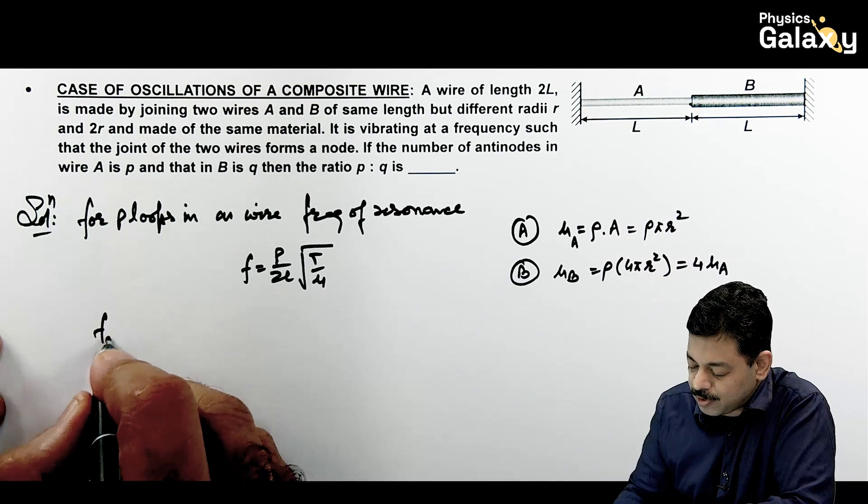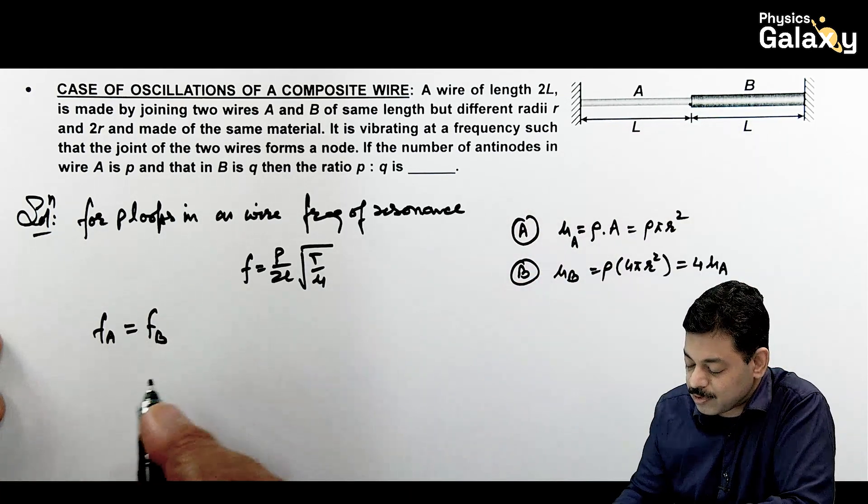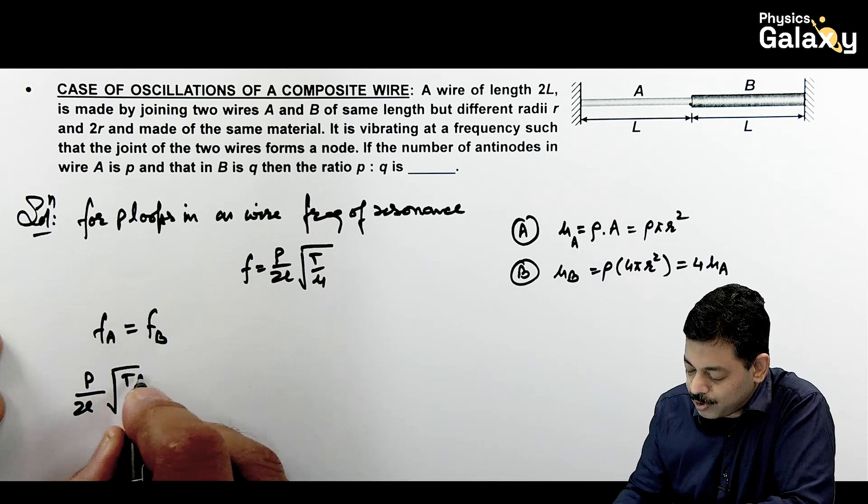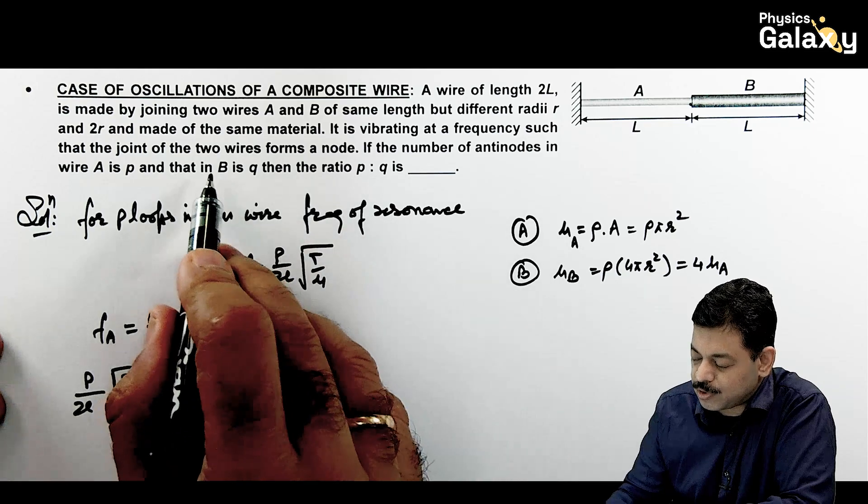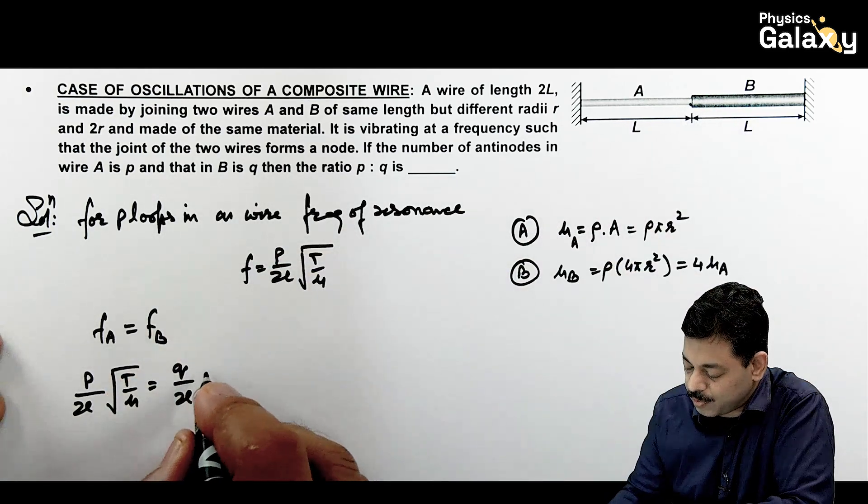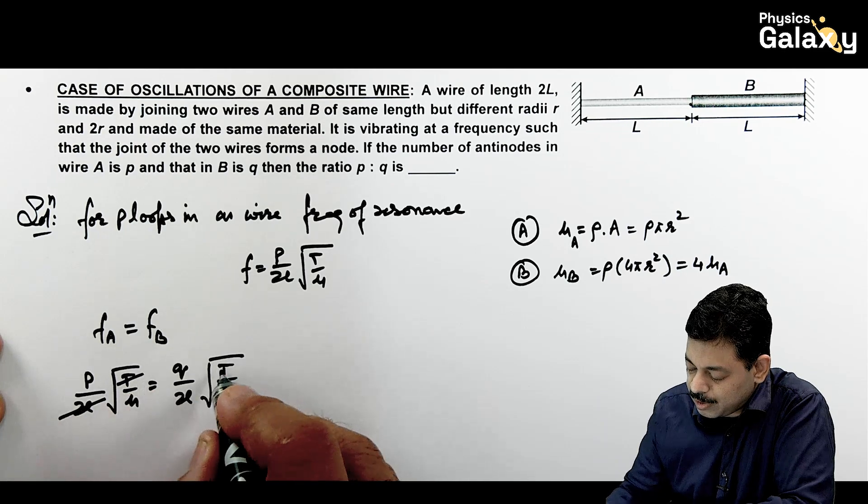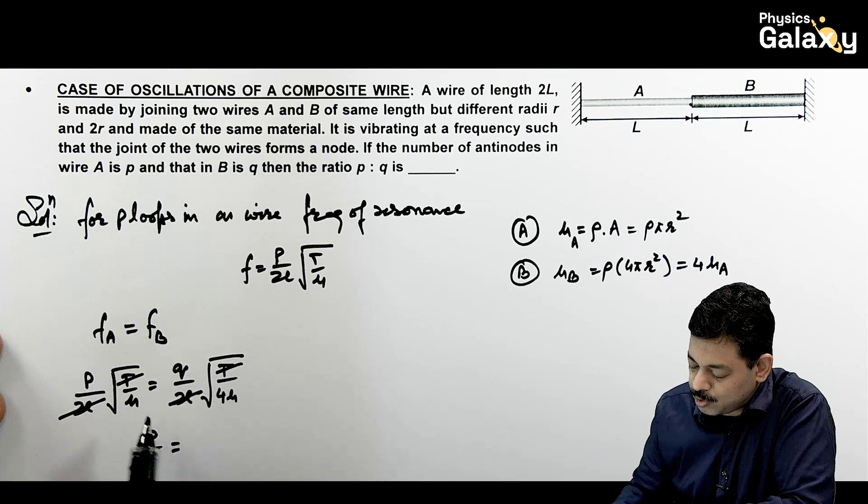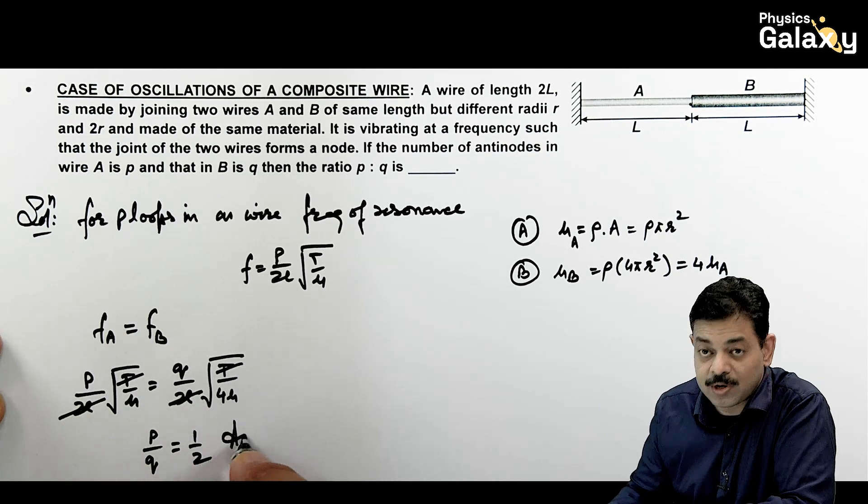So here you can directly say that frequency in A is equal to frequency in B. So this can be written as P by 2L root of T by mu should be equal to Q by 2L. Q antinodes are in B, that means Q loops are being formed. This is root of T divided by 4 mu. Everything is same. So here 2L and T gets cancelled out. And this gives us P by Q is equal to root of 1 by 4, this is 1 by 2. That is the answer to this problem.